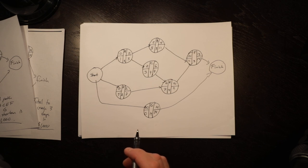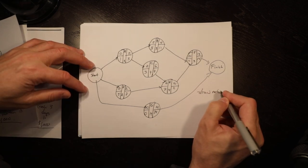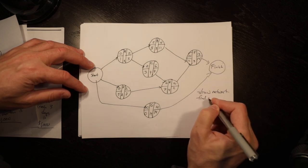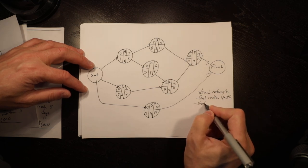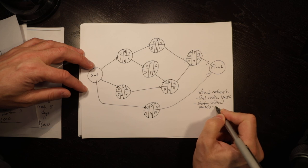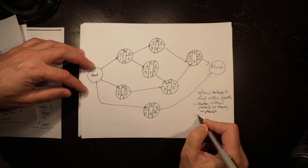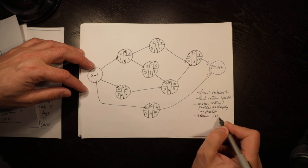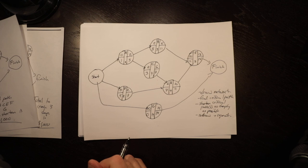Draw the network, find the critical path, shorten critical path or paths as cheaply as possible, redraw, and repeat. If you follow the process, if you've drawn the network correctly, this isn't that hard to do. And as I highlighted, there are really only two tricks. So good luck and ask if you have any questions.